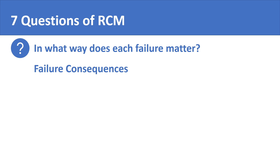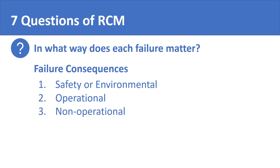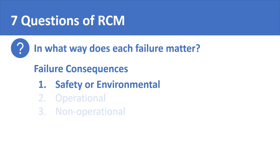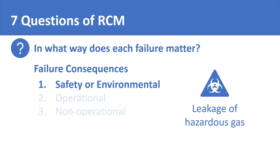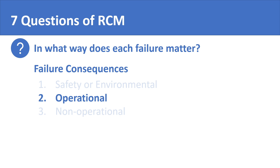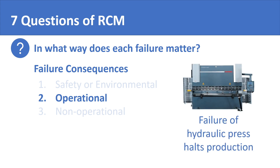These categories are safety or environmental consequences, operational consequences, and non-operational consequences. Safety and environmental consequences are related to health and safety of people and well-being of the environment. For example, leakage of a pressurized line carrying hazardous gas or liquid poses risk to the environment and health of people surrounding it. Operational consequences are related to production and quality of output. For example, failure of a hydraulic press machine in a sheet metal factory poses risk of losing the volume of output or the quality of punching the sheets.